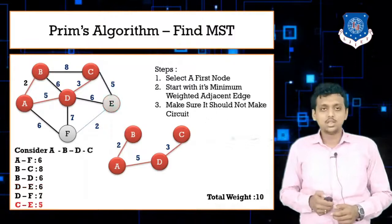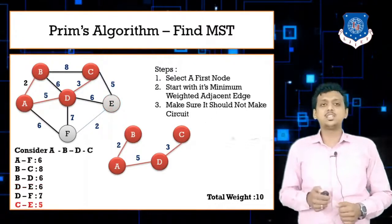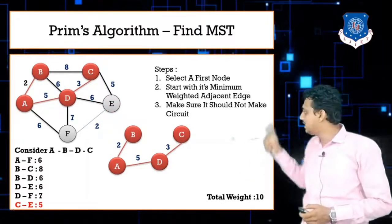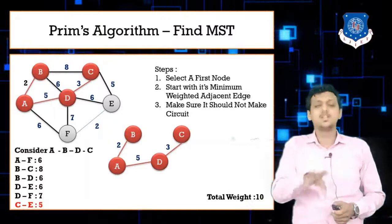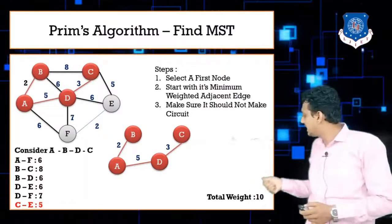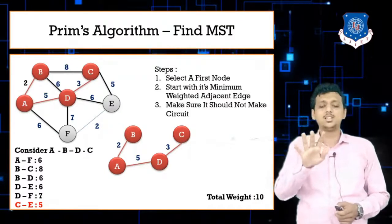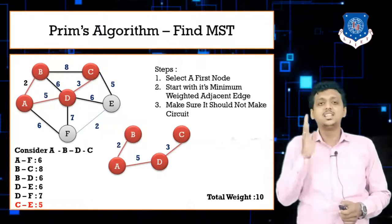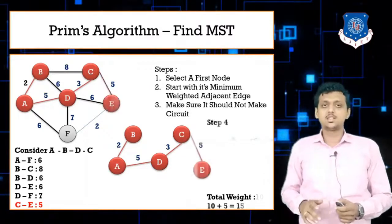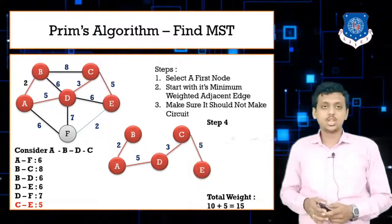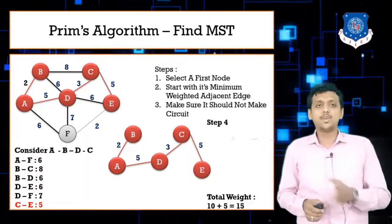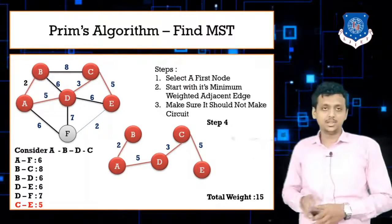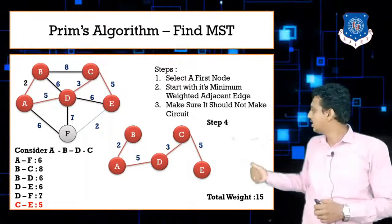In step 4, I need to select the adjacent edge with minimum weight from all 4 nodes: A, B, D, and C. The edge with minimum weight from these nodes is CE, which is 5. So I select edge CE with weight 5. My total weight becomes 10 plus 5, which is 15.